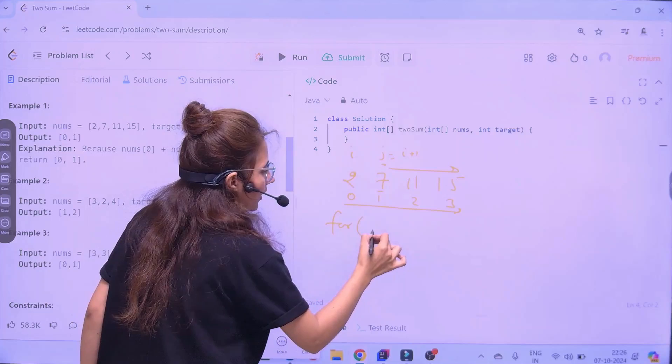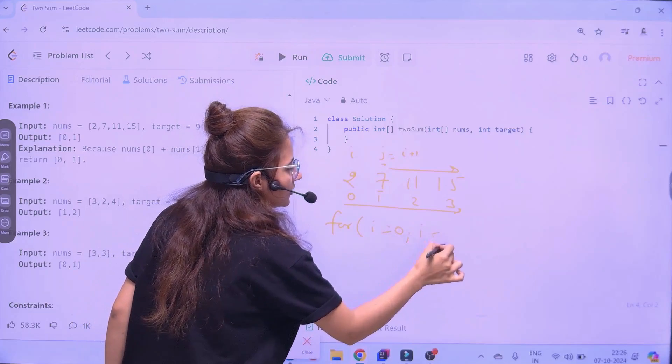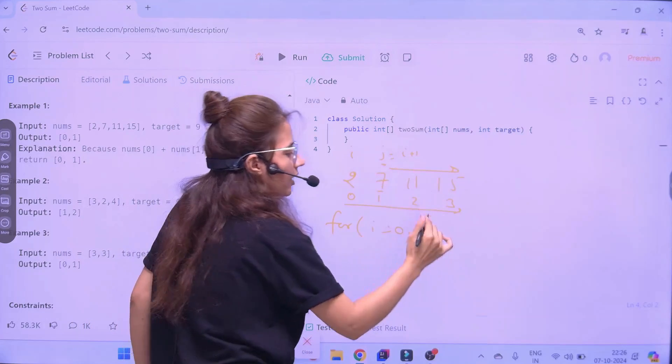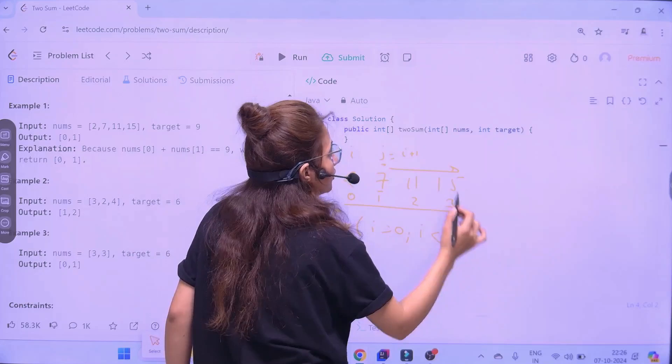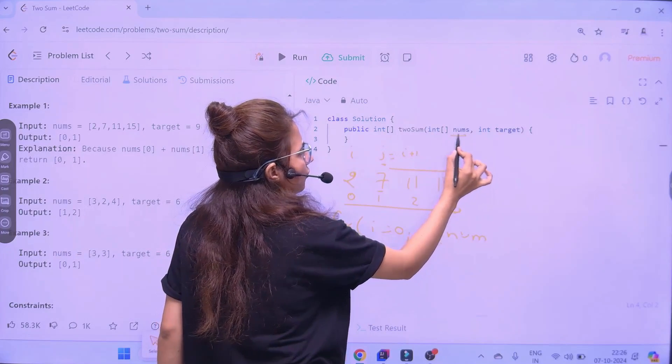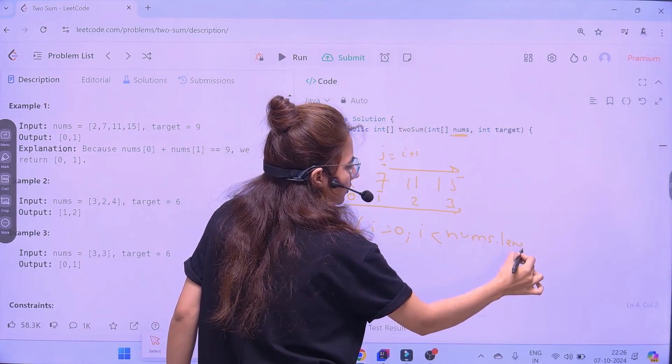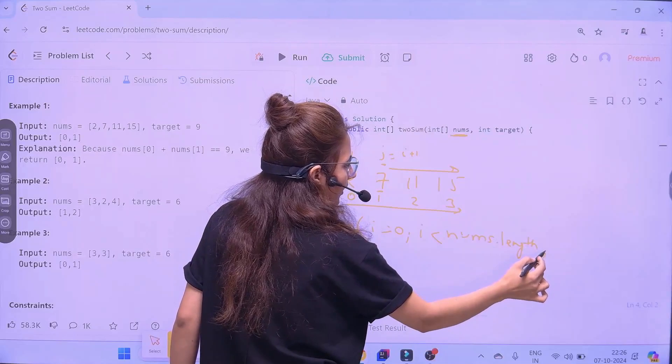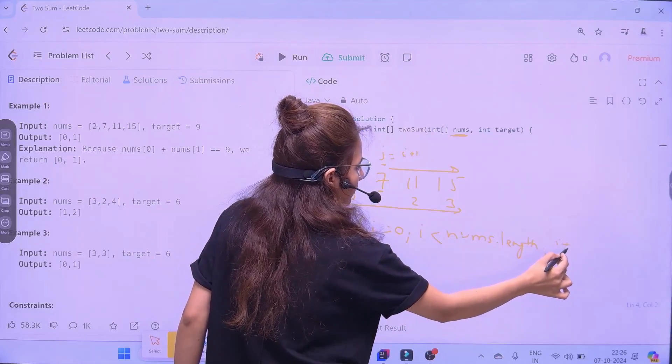So, one for loop here. I would be from 0 to i less than whatever the length of this array. And, how to find out length. Just name of the arrays. We are given nums. Nums dot length in Java.